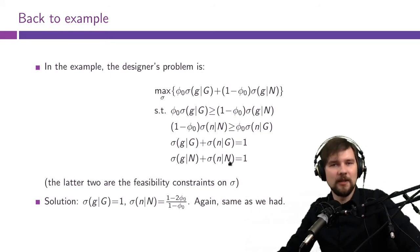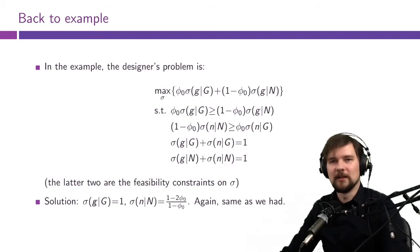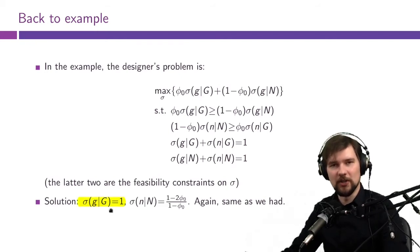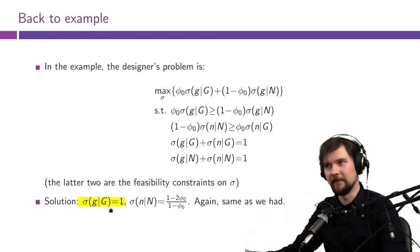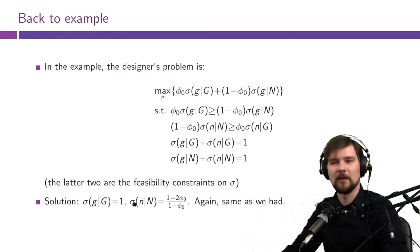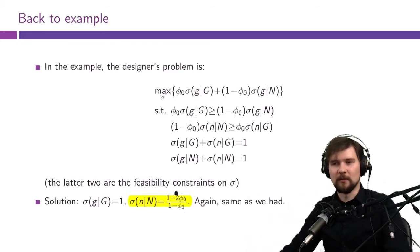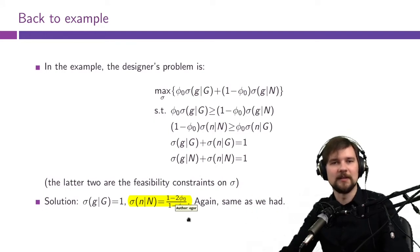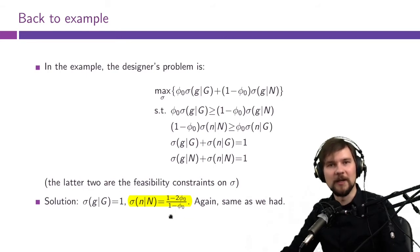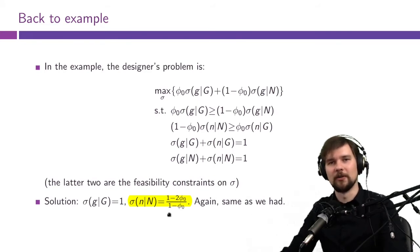The solver will tell you the optimal experiment is: if the subject is guilty, always issue the recommendation to convict; if the subject is not guilty, issue the acquittal recommendation with a certain probability (derived in last week's slides) and with the complementary probability, convict an innocent subject. So as a prosecutor, you're very pleased.